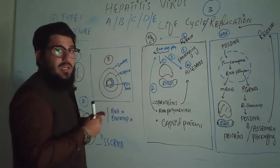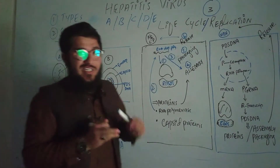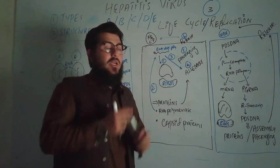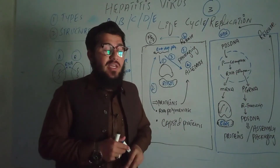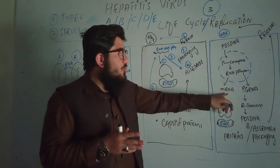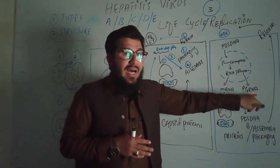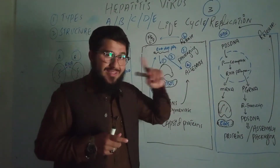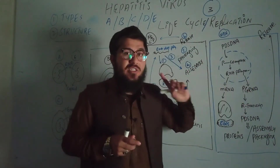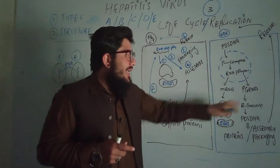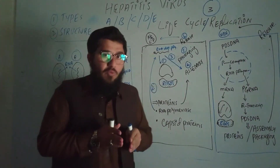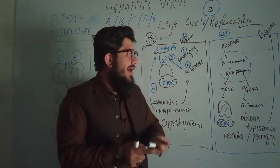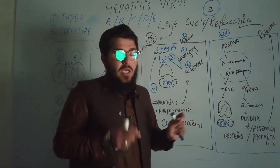At the end, fully double-stranded DNA of the virus is produced. Then by means of its own RNA polymerase enzyme, the virus transcribes this DNA into two RNA molecules: messenger RNA and pre-genomic RNA.